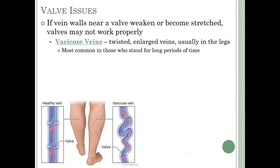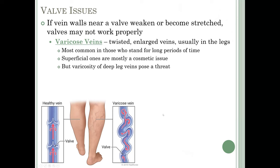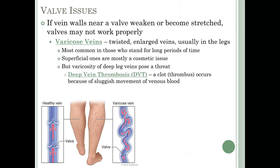Varicose veins are most common in people who stand for long periods. Superficial ones are mostly a cosmetic issue, usually treated only because people don't like their appearance. However, varicosity of a deep leg vein can actually pose a threat. Deep vein thrombosis (DVT) is a clot — a thrombus — occurring because of the sluggish movement of venous blood. If blood is not returning to the heart and just sitting in the veins, it has an increased opportunity to clot.